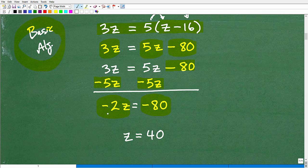And at this point, the problem just needs to divide both sides of the equation by negative 2. Of course, negative 80 divided by negative 2 is 40, positive 40. And that's what z is equal to.